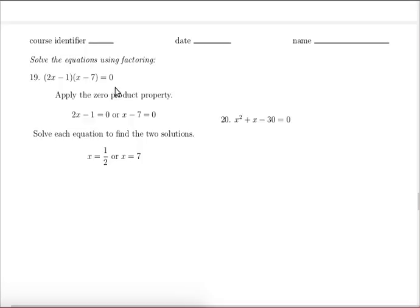Solving 2x minus 1 equals zero, we would add 1 to both sides and divide both sides by 2, so x could be 1 half or x could equal 7. We can plug each of those choices back in and find that both equal zero.